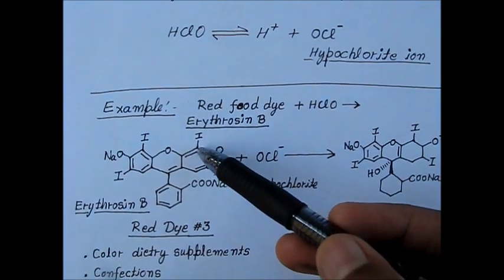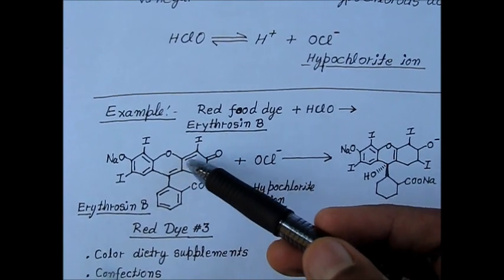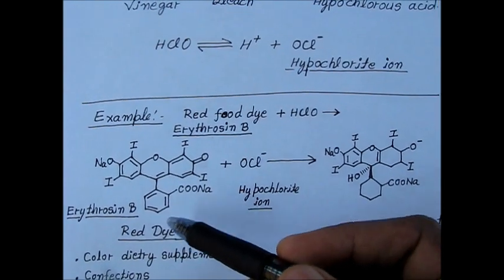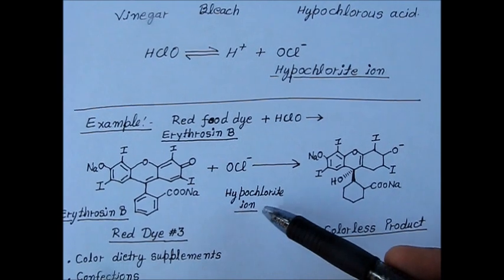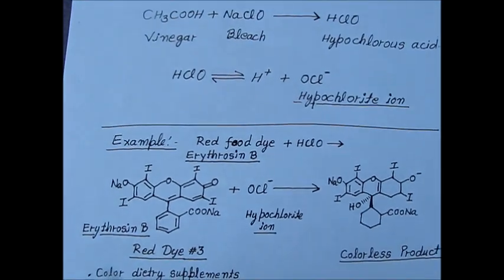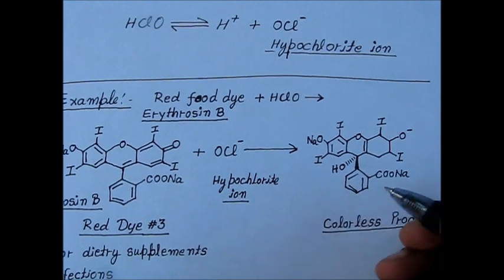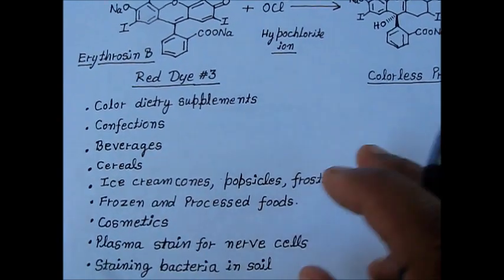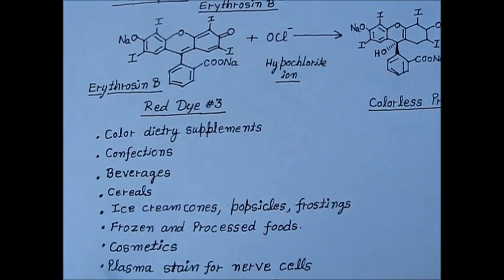Looking at the chemical structure of Erythrosine B, you can see there are double bonds — conjugated double bonds — alternating throughout the molecule. This is alkene conjugation. When we treat this dye with hypochlorite ion, it forms a colorless product, which is the alcohol form. We also need a benzene ring component for this reaction.